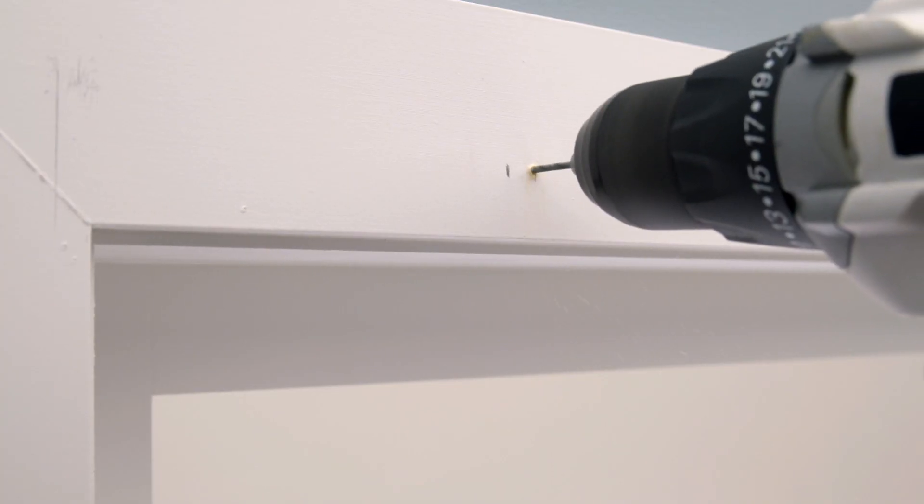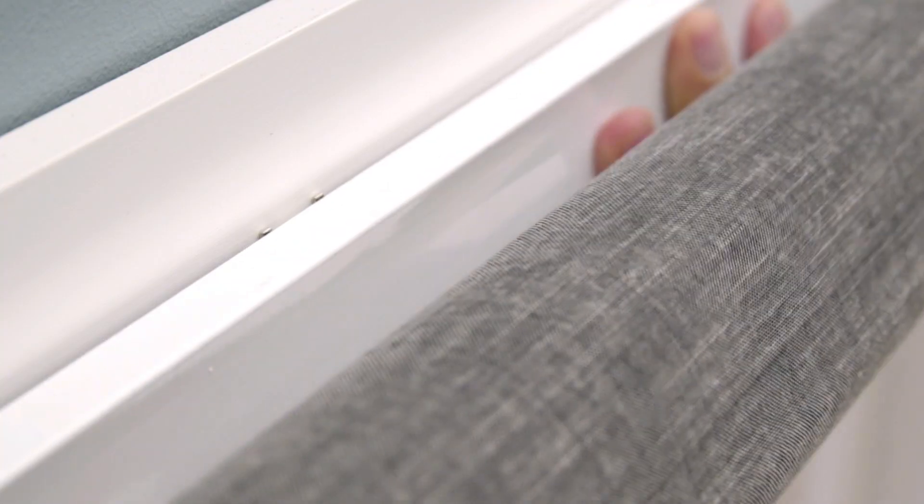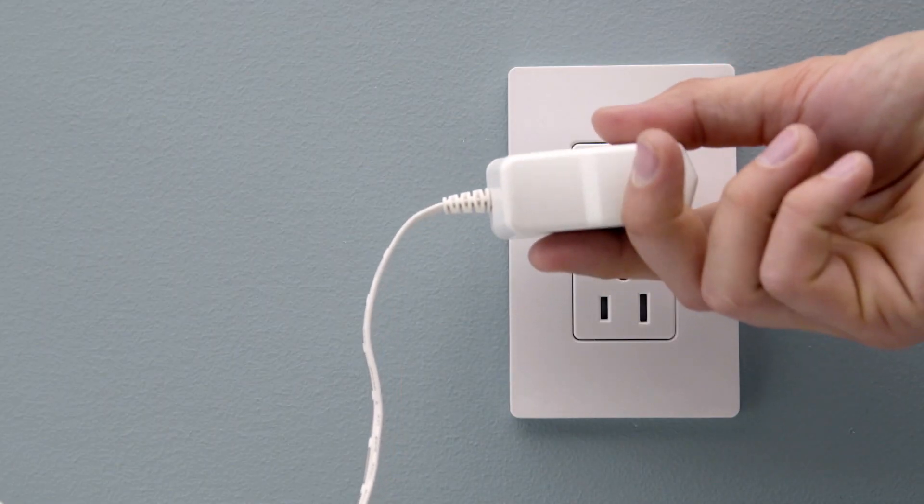Installing a shade isn't difficult and takes less than 30 minutes. In this video, we will show you how to install a wired roller shade.